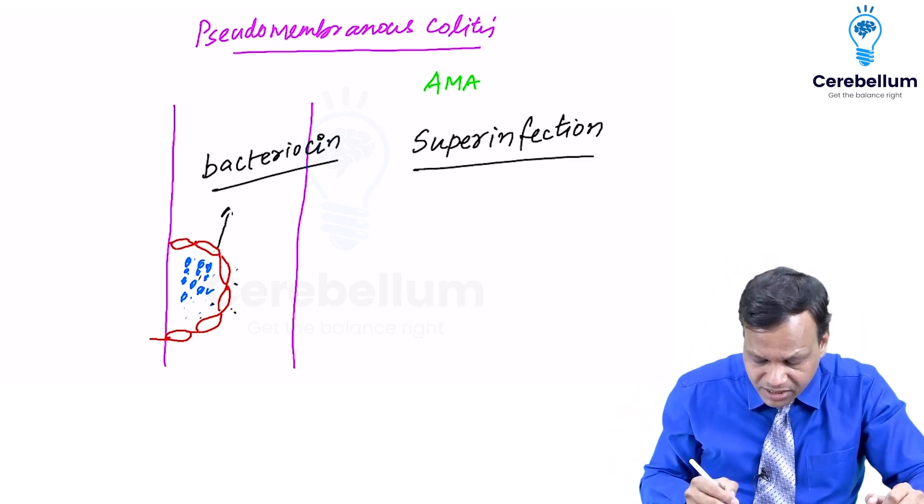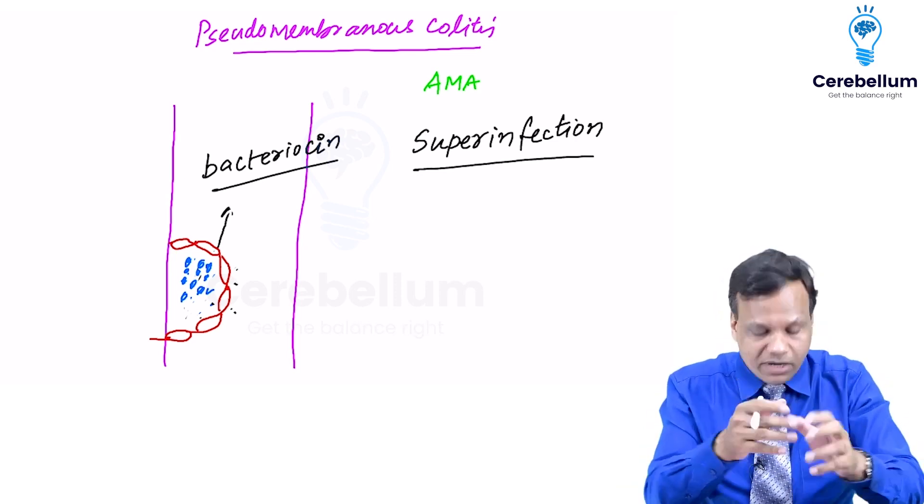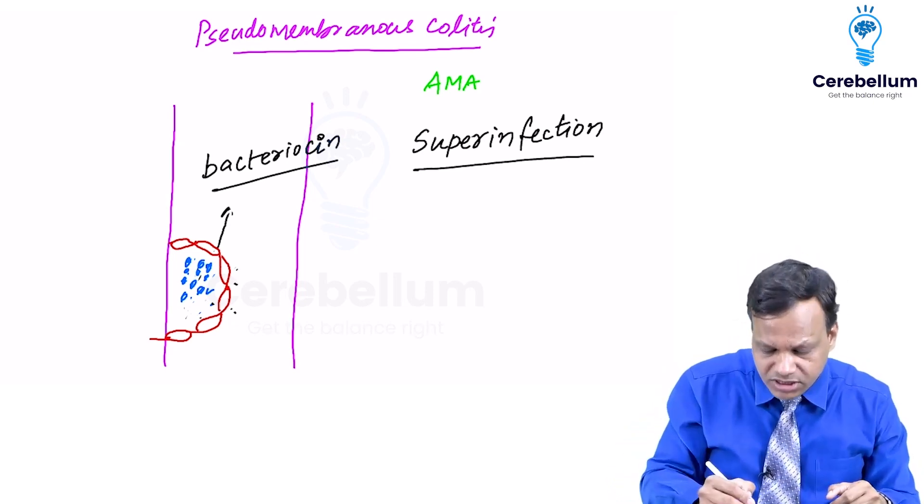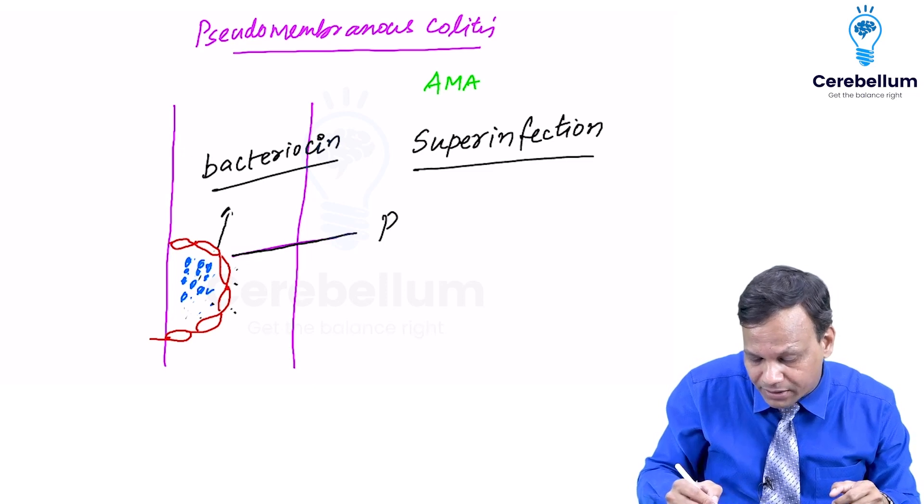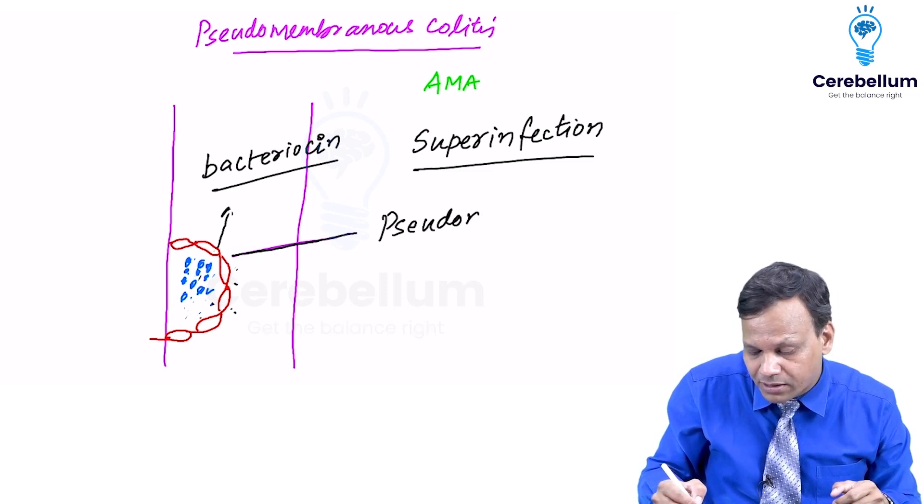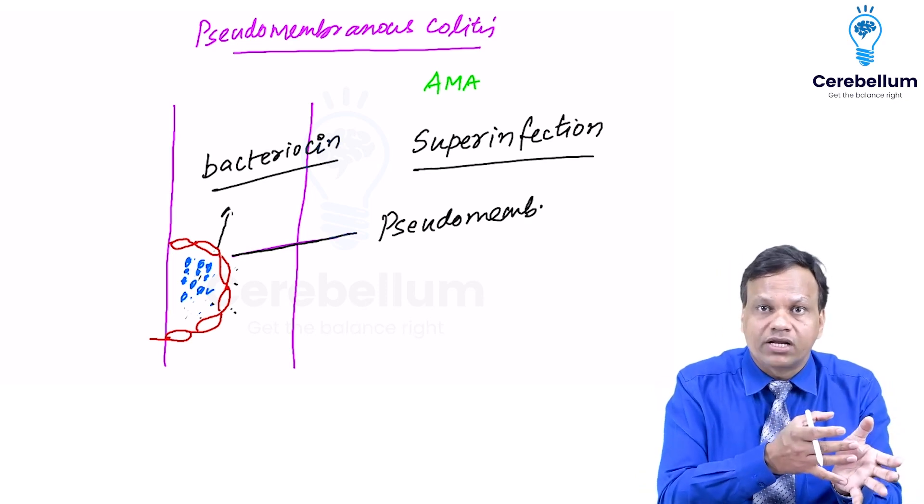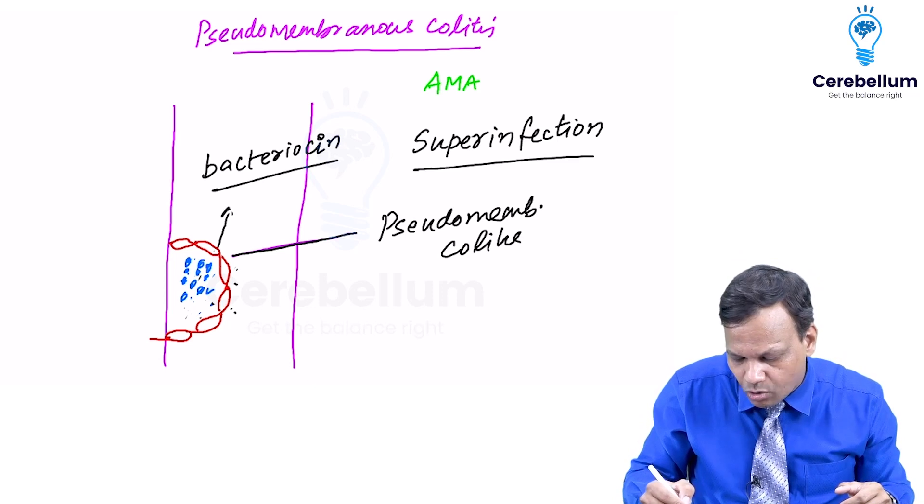Remember this membrane is not a true membrane. Normally the membranes are consisting of epithelial cells but here the membrane is consisting of WBCs or pus cells only. So this is known as pseudomembrane. Now because it is infection of the colon, we can say colitis. So this condition is known as pseudomembranous colitis.